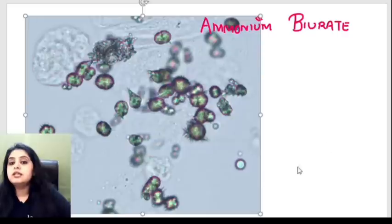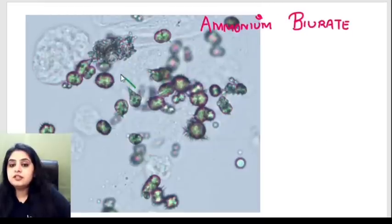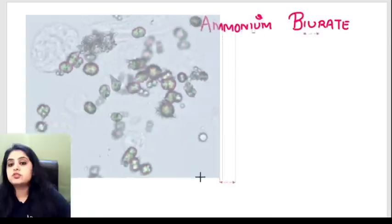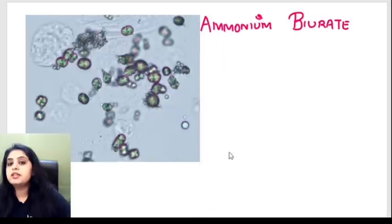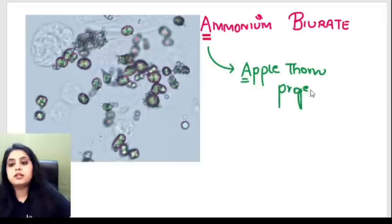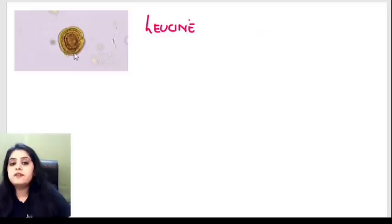Moving on, here we have crystals showing classical thorn-like projections. These thorn-like projections are known as apple-thorn projections. 'A' for apple-thorn projections means ammonium biurate crystals. So apple-thorn projections equal ammonium biurate crystals.